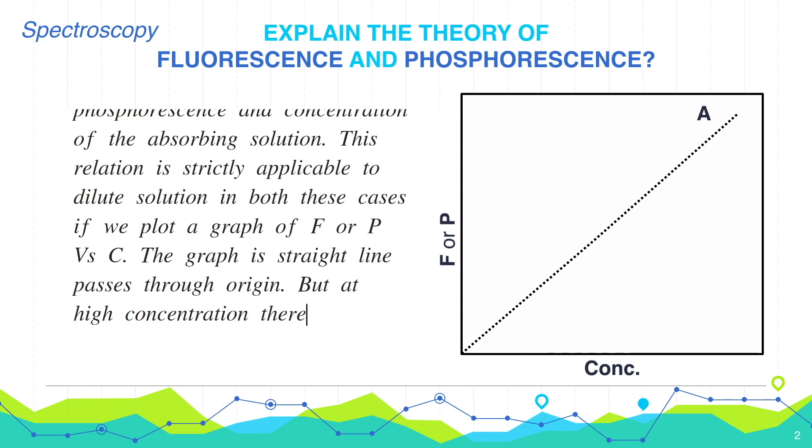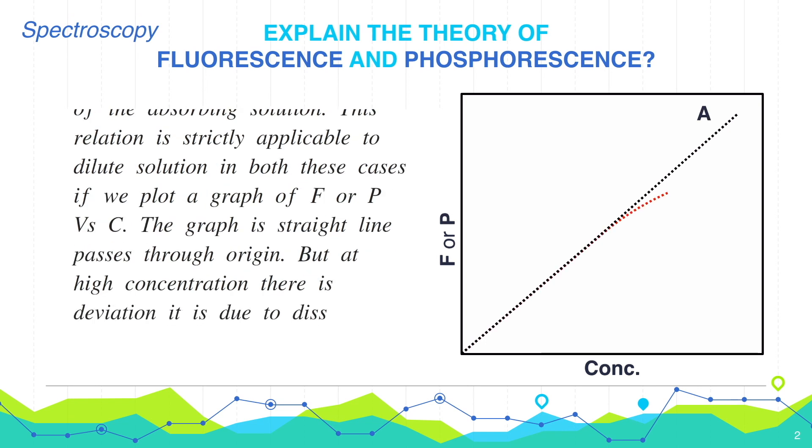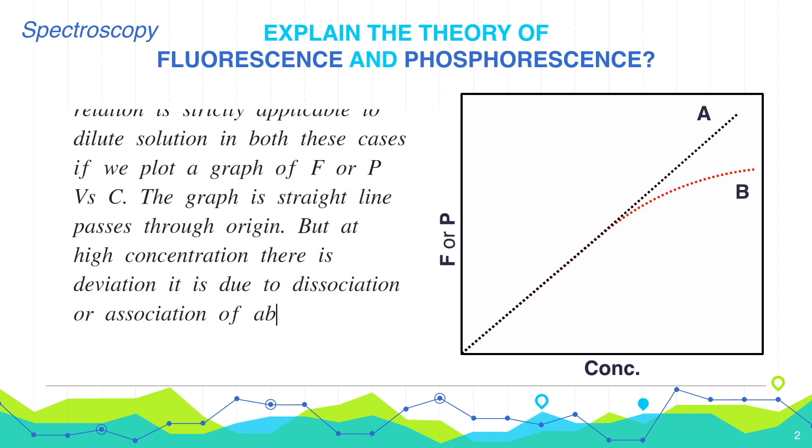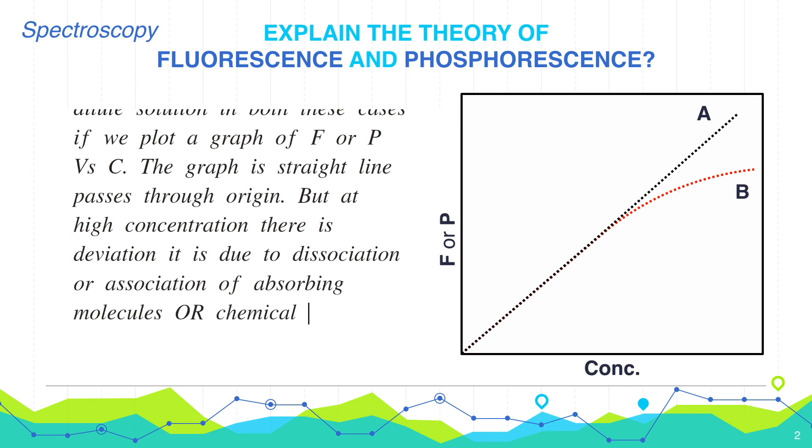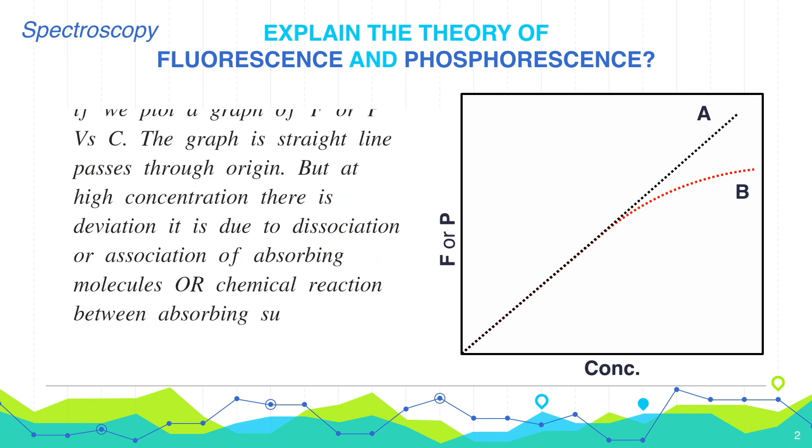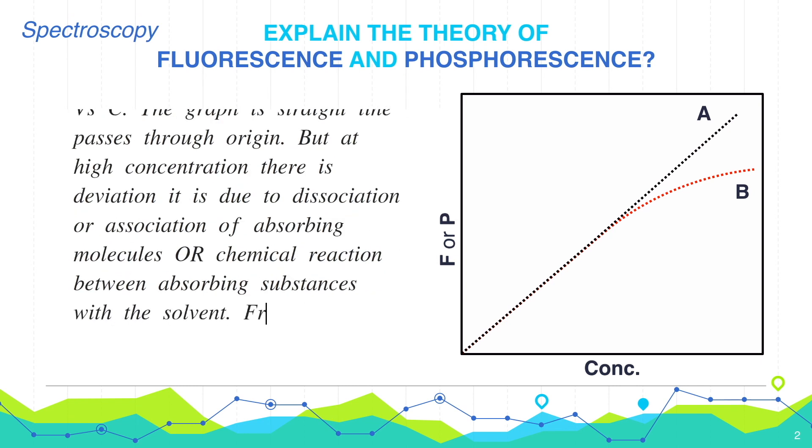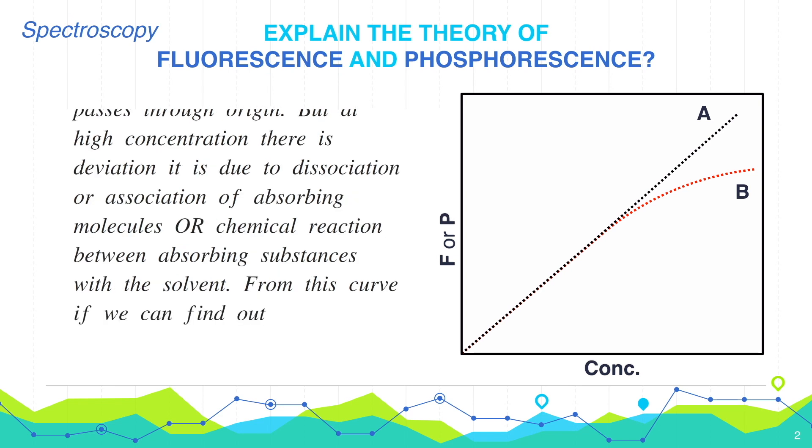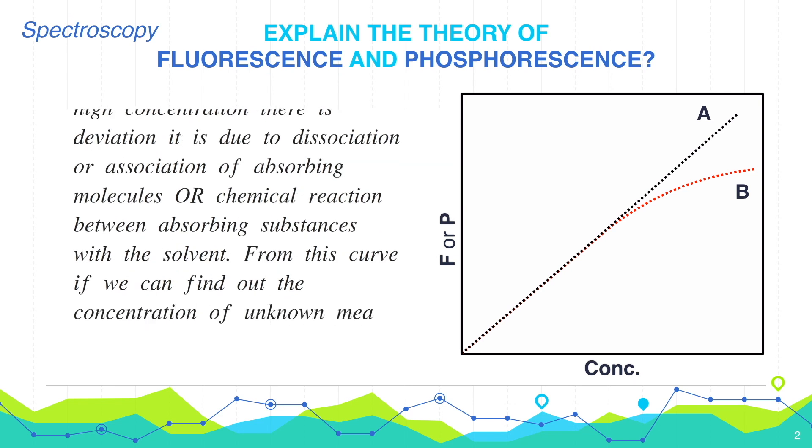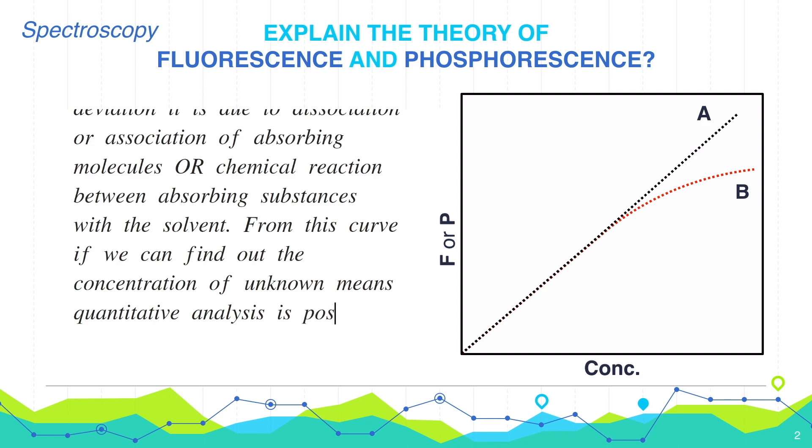But at high concentration, there is deviation. It is due to dissociation or association of the absorbing molecule or chemical reaction between absorbing substance with the solvent. From this curve, we can easily find out the concentration of unknown solution. Means quantitative analysis is possible.